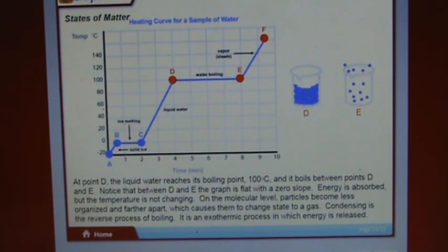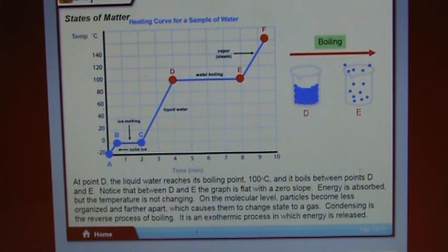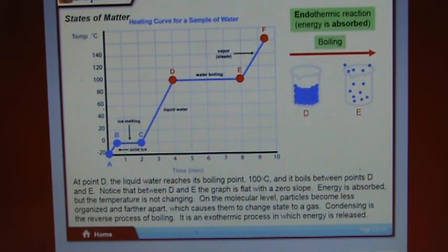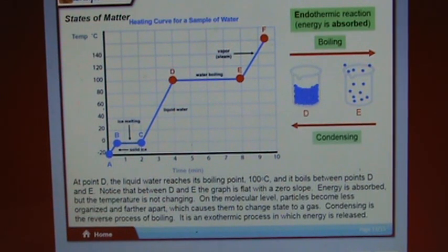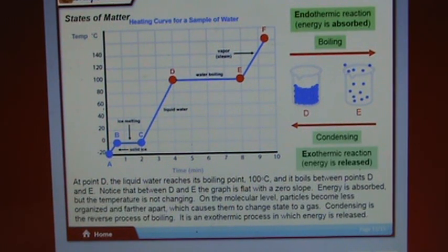At point D, liquid water reaches its boiling point of 100 degrees Celsius and boils between points D and E. Notice that between D and E, the graph is flat with a zero slope — energy is absorbed but temperature is not changing. On the molecular level, particles become less organized and farther apart, changing state to a gas. Condensing is the reverse process of boiling and is an exothermic process in which energy is released.